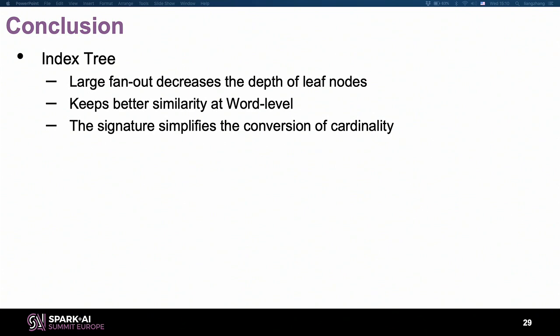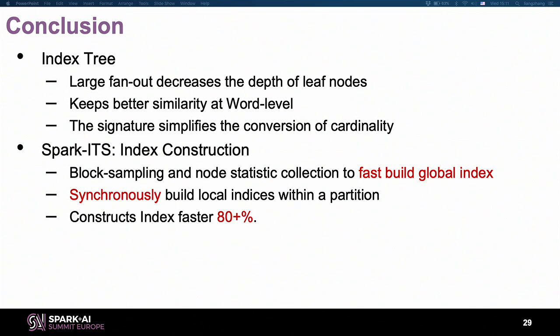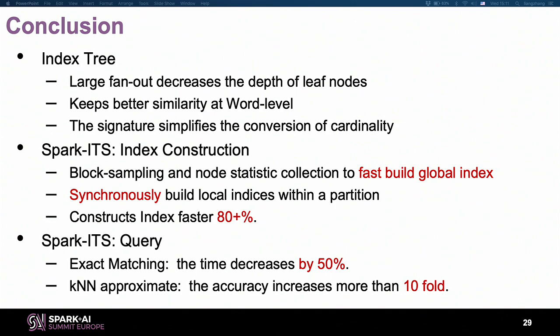To summarize our work: we introduced a new index tree designed for large scale, using large fan-out to decrease the depth of leaf nodes and achieving better word-level similarity. We proposed the SXT signature to simplify cardinality conversion. For our system, the global index construction finishes very quickly, the local index supports parallel processing, construction is fast — about 80% improvement — and query time is decreased by about half. Accuracy for KNN approximate queries is greatly improved, which is critical. Thank you.